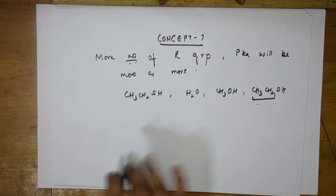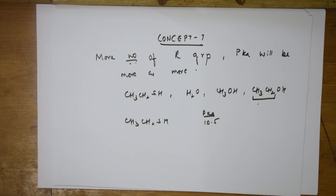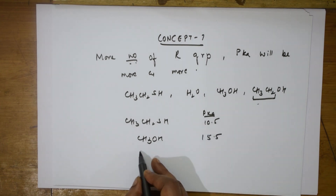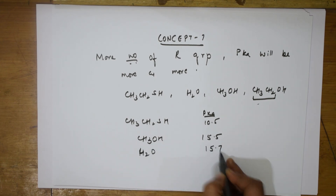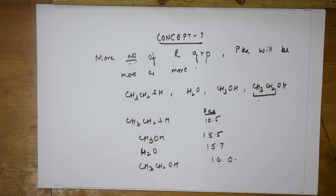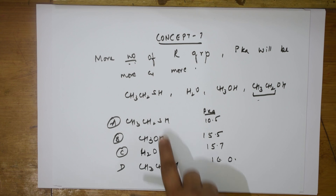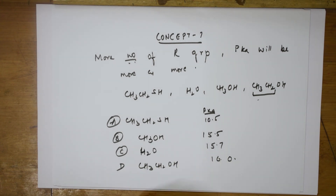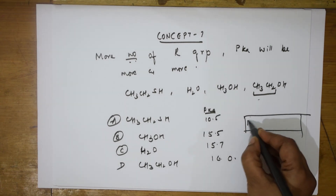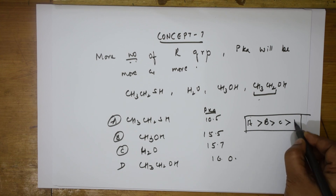The pKa values are: CH3CH2SH (thiol) = 10.5, methanol = 15.5, water = 15.7, and ethanol CH3CH2OH (bigger alkyl group) = 16. Labeling these A, B, C, and D respectively, the order of acidity from strongest to weakest is: A (thiol) > B (methanol) > C (water) > D (ethanol). Remember this order.